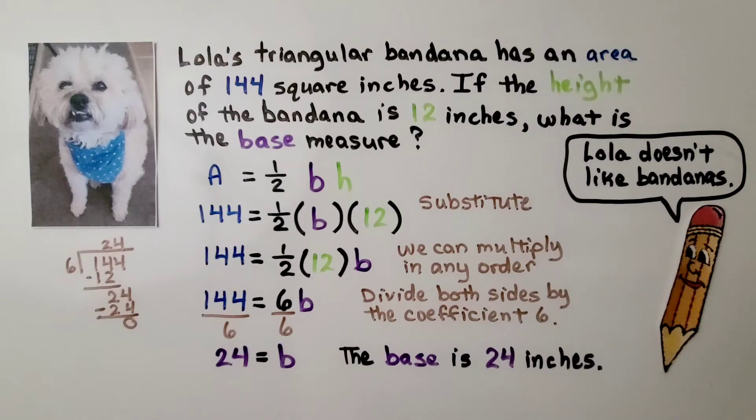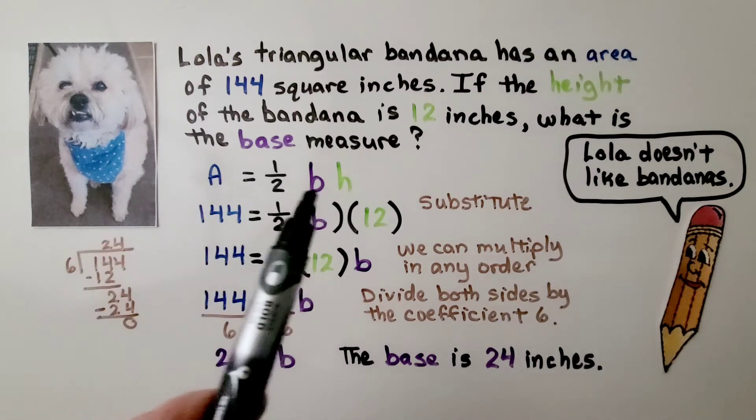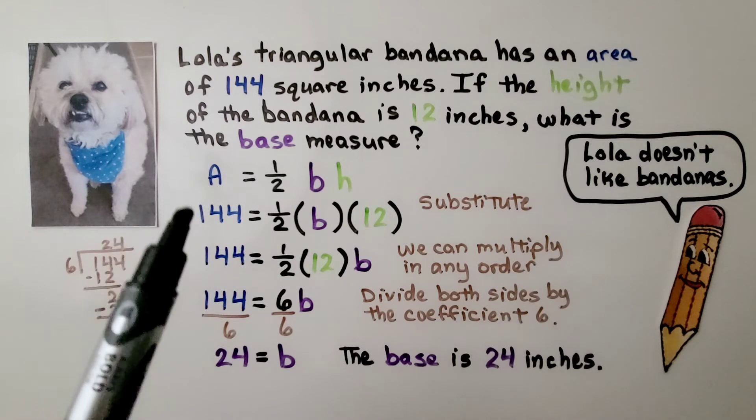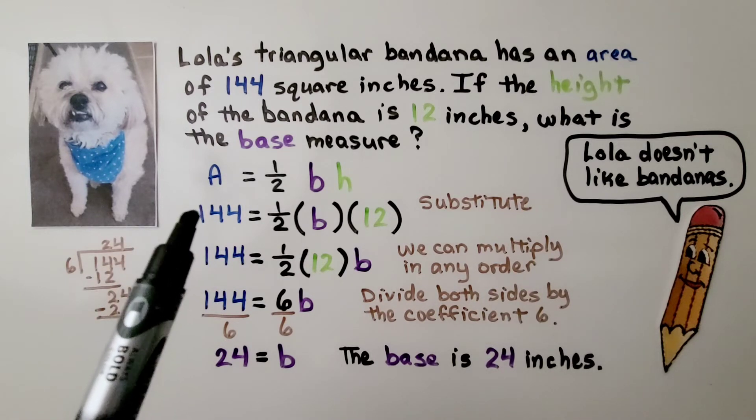Lola's triangular bandana has an area of 144 square inches. If the height of the bandana is 12 inches, what is the base measure? We have our formula for the area of a triangle. We know that the area is 144. We set that here for A.